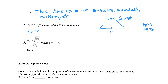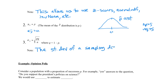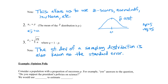We also have a formula for the standard deviation of p-hat, where q is 1 minus p. Note that the standard deviation of a sampling distribution is also known as the standard error. It was also mentioned in section 7.1. If you use statistical software and they do a data analysis, they'll typically report the standard error.